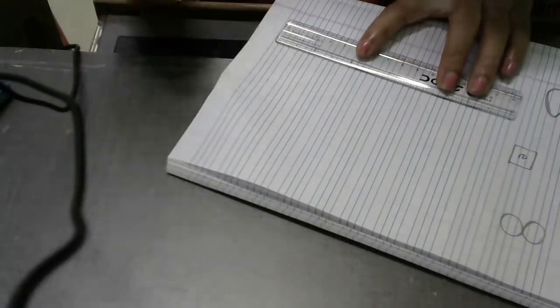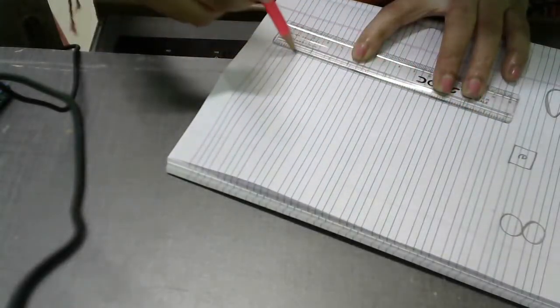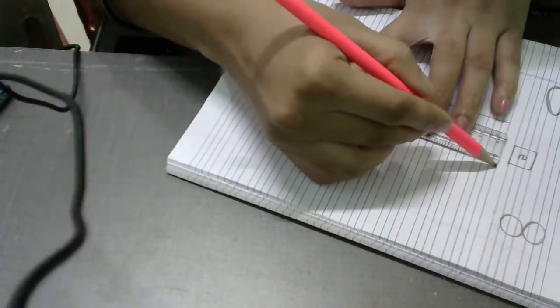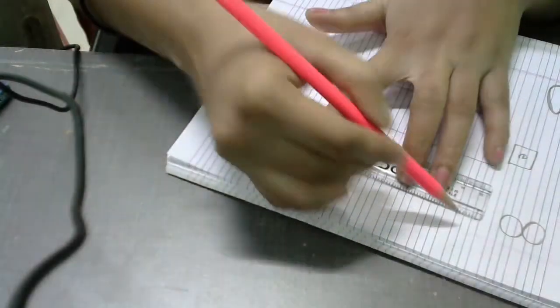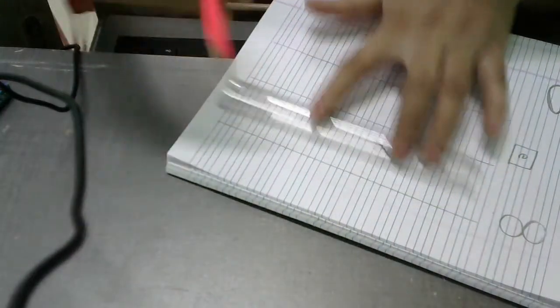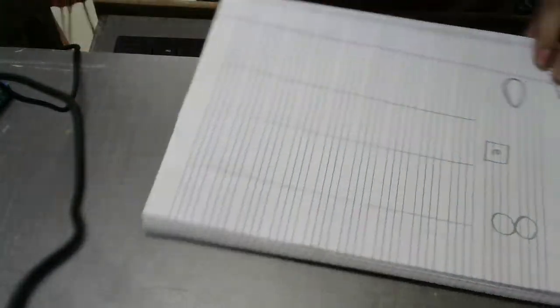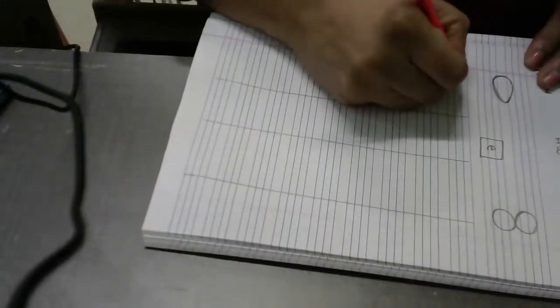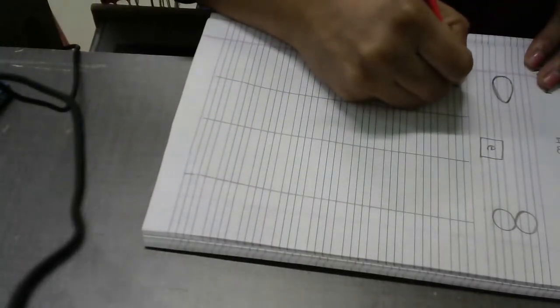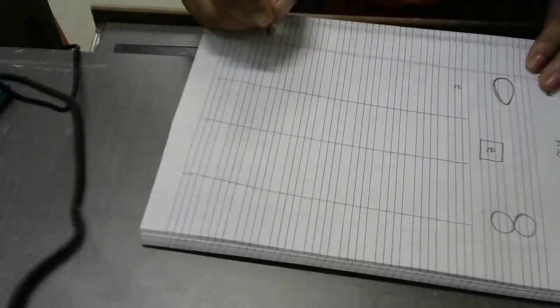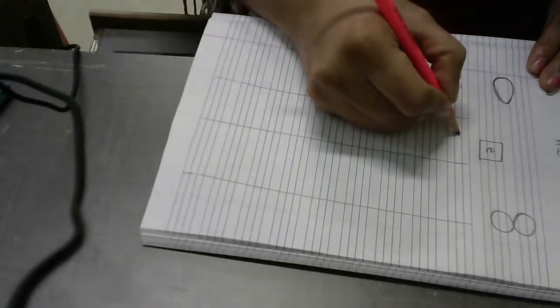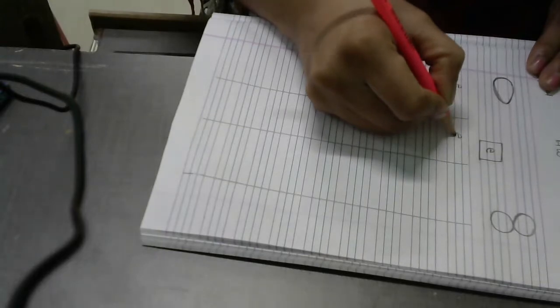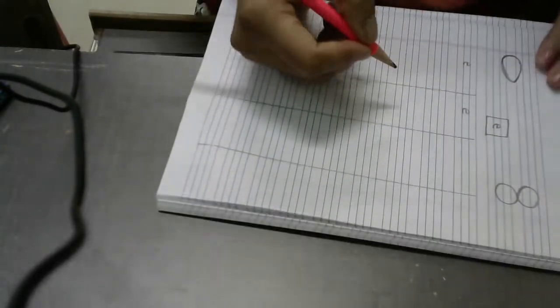Now draw four columns. Take a ruler and draw four columns. And we will write letter E. Small sleeping line and a curve line. Sleeping line and a curve line. Letter E.